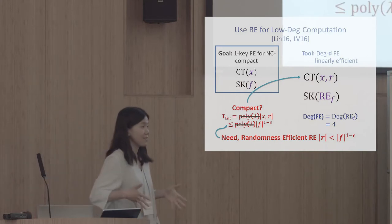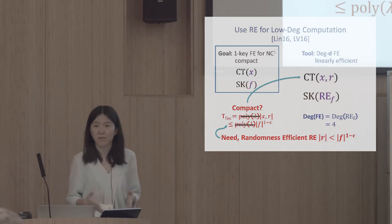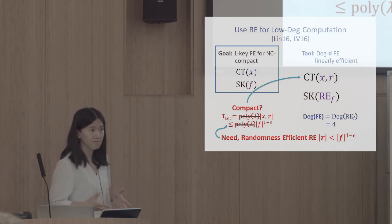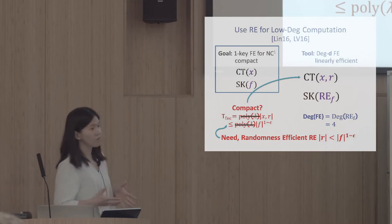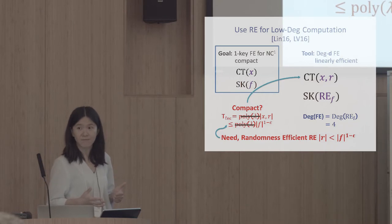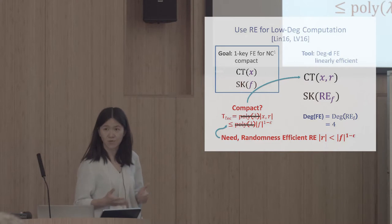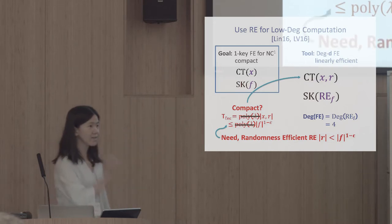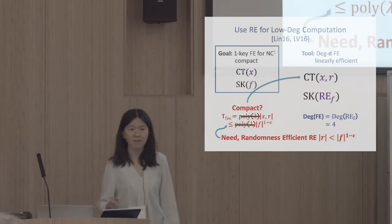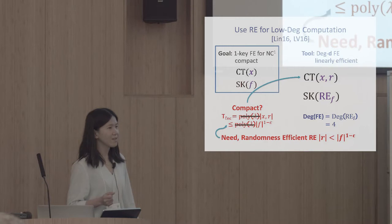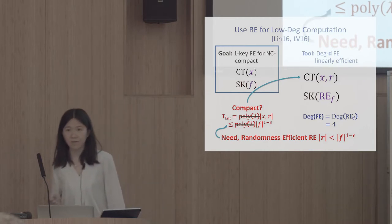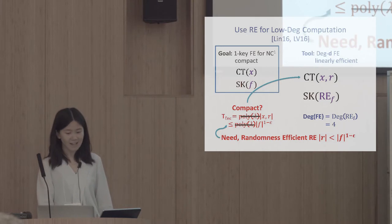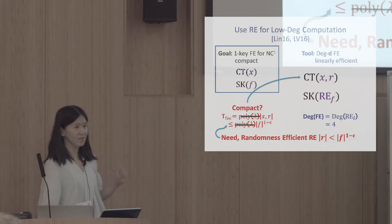The trickier part is the compactness requirement: we want encryption time to be sublinear in the function size. Because the degree-d FE has linear efficiency, encryption time is linear in input size. For sublinear encryption time, we need randomized encodings that are randomness-efficient — the randomness length should be sublinear in the size of the function being encoded. We don't directly have that, so this is where the PRG comes in.